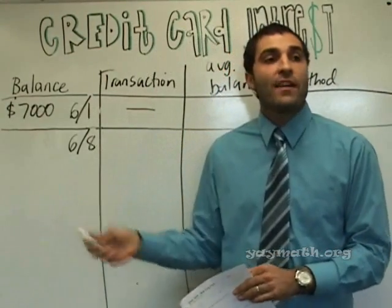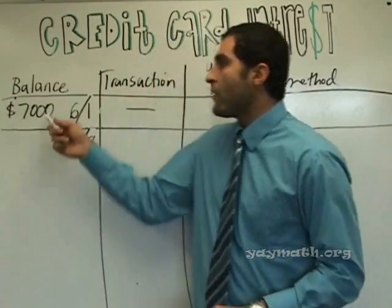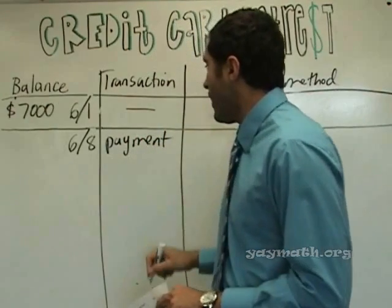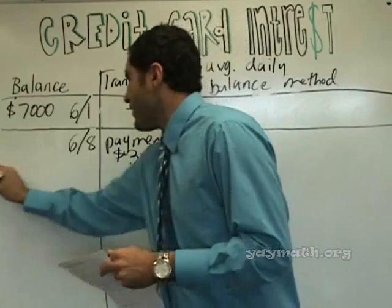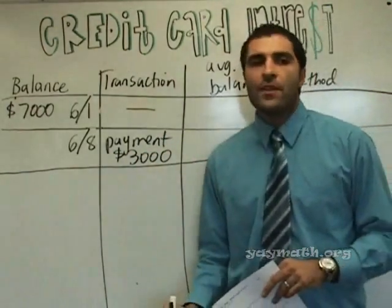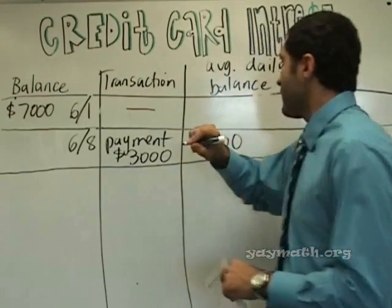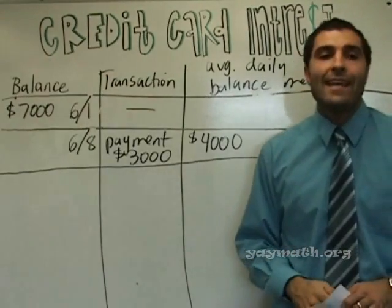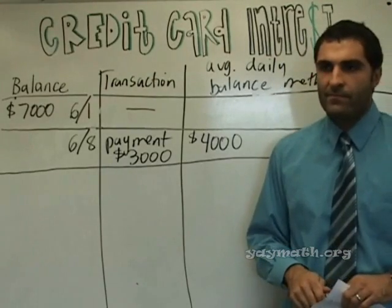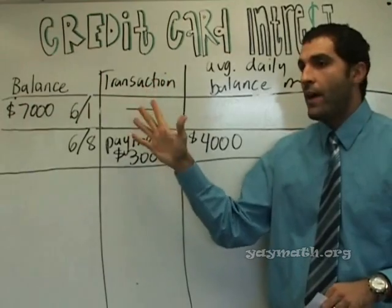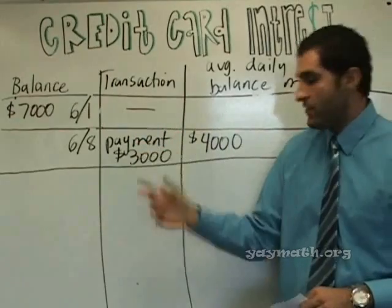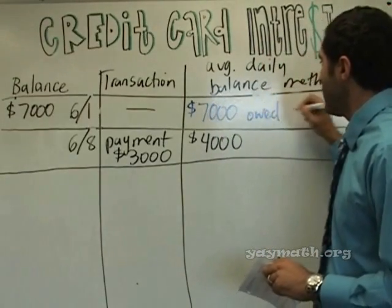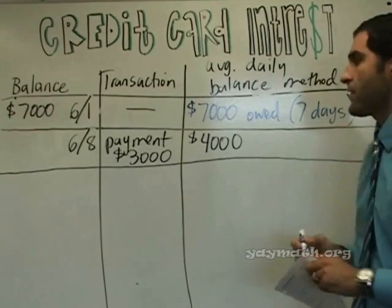So going in, we owe $7,000. Let's say on the 8th we made a payment of $3,000. So now how much do we owe? $4,000. This is the beginning of the Average Daily Balance calculation. For how many days did we owe $7,000? Seven — from the 1st through the 7th. On the 8th we made a payment, so we don't owe $7,000 anymore. So: $7,000 owed for seven days.